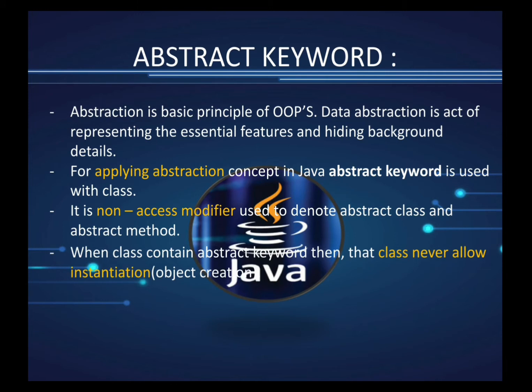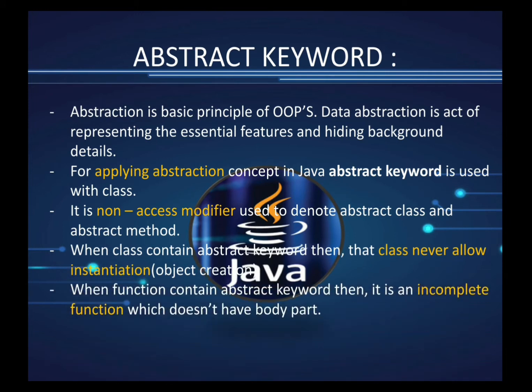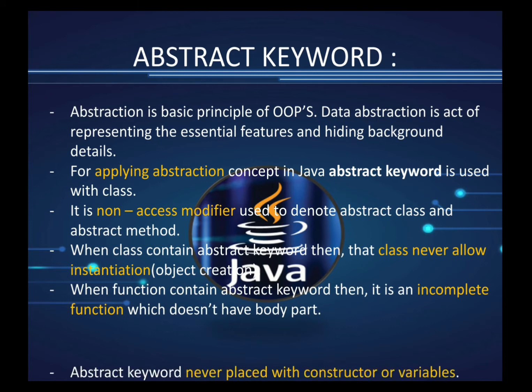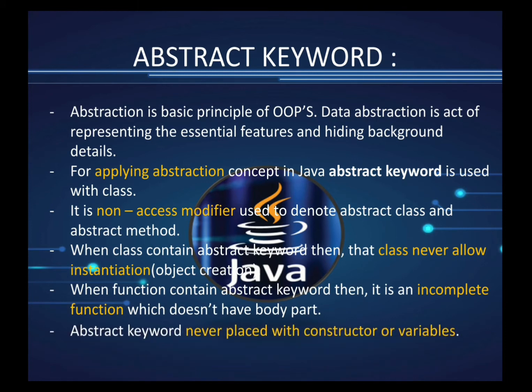When a function contains the abstract keyword it is an incomplete function — it doesn't have any body part. Abstract keyword never applies to a constructor or variable. Keep in mind: abstract keyword is only for two things — class and function, nothing else.